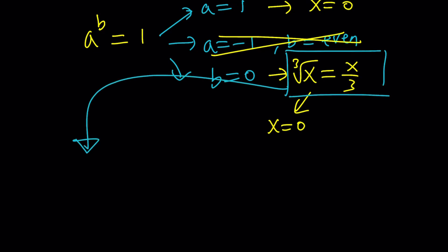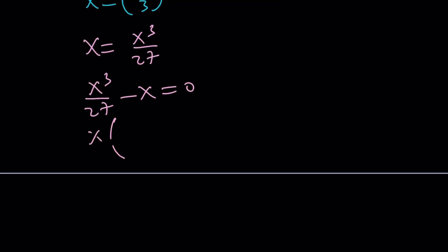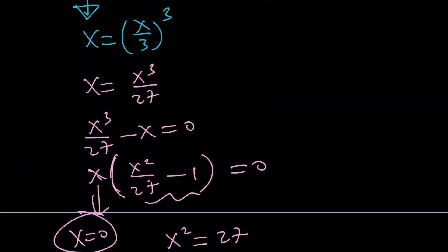If you cube both sides, you're going to get x equals x over three cubed. And then we can cube this, x cubed over 27. Instead of dividing by x or canceling out the x's, let's just go ahead and put everything on the same side. Subtract x and then factor out an x. And you're going to get x squared over 27 minus one equals zero. And from here, we get the following. x equals zero, obviously, is going to follow. And then the other solution is going to come from here.